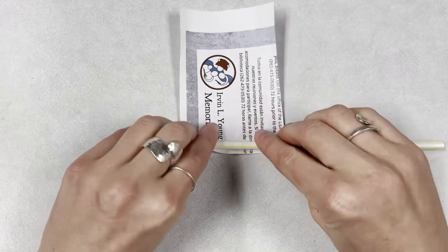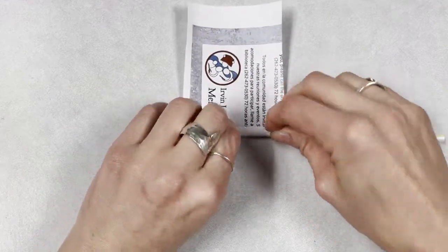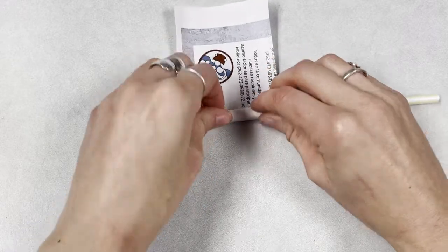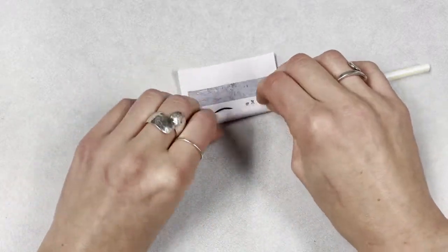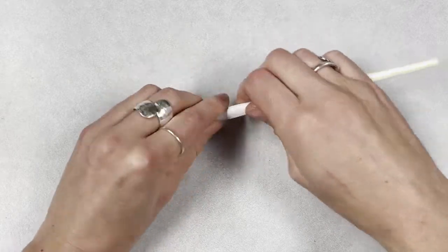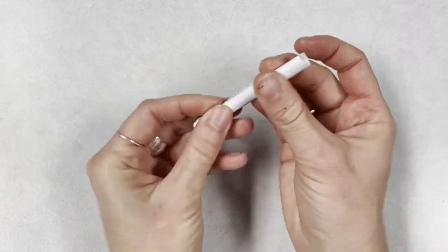Grab your straw and roll the scrap piece of paper around the straw until it's all rolled up. You should have a tube that looks like this.